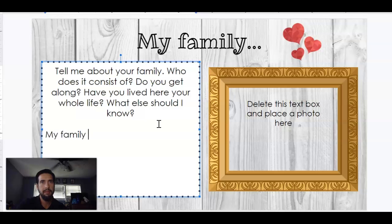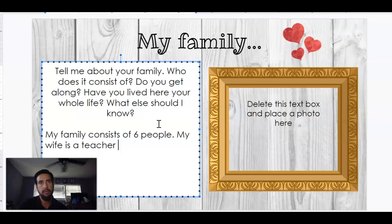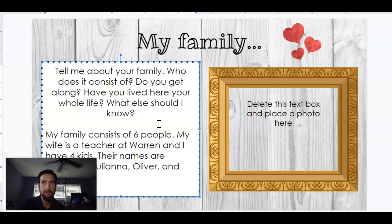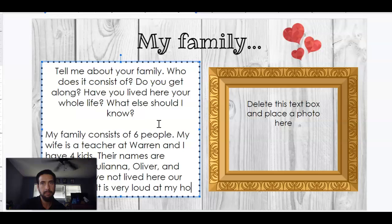My family consists of six people. My wife is a teacher at Warren, and I have four kids. Their names are Sebastian, Juliana, Oliver, and Mia — sometimes I forget. Have you lived here your whole life? No, we have not lived here our whole lives. And what else should I know? It is very loud at my house — always. So that's what I'm going to do.